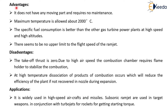Advantages of the Ramjet engine: it does not have any moving parts, so it does not require any maintenance. Maximum temperature is allowed up to 2000°C. The specific fuel consumption is better than other gas turbine power plants at high speed and high altitude. There seems to be no upper limit to the flight speed of the Ramjet engine.